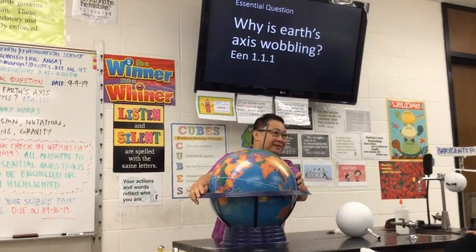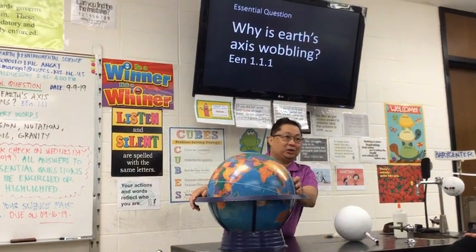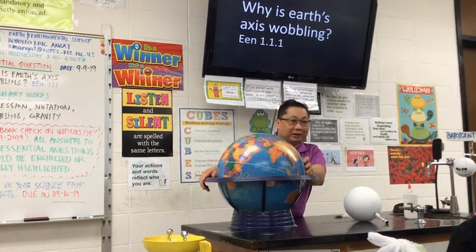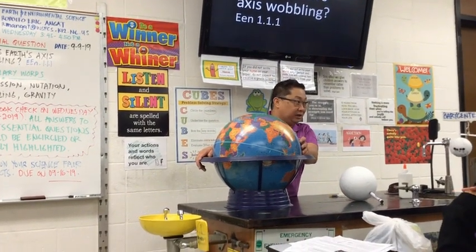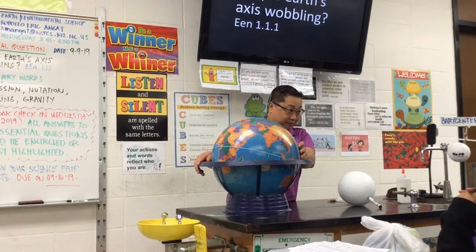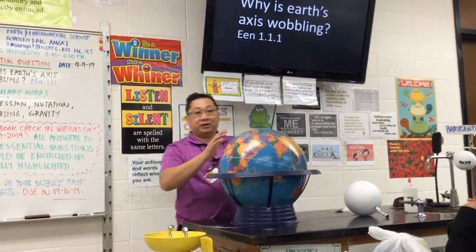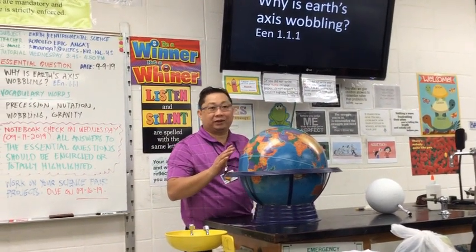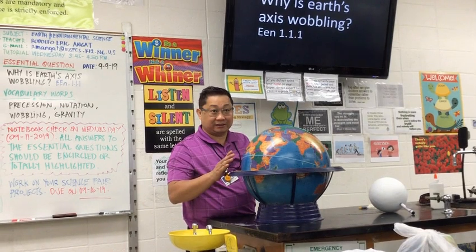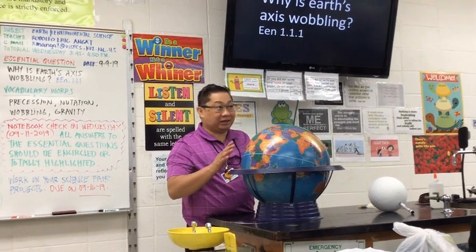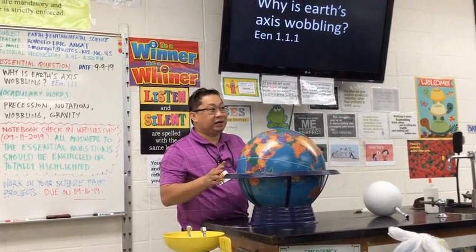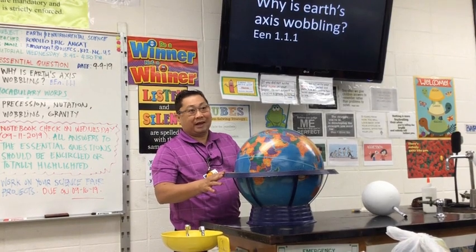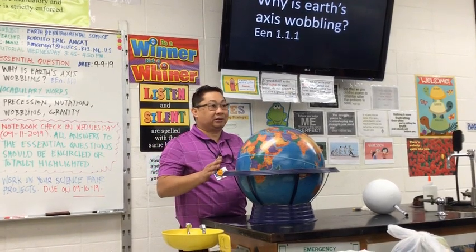Take note, nothing in the universe is permanent. The only thing that is permanent is change itself. So even the Earth's axis is not always 23.5 degrees. It changes, though the change takes place over a very long time — this tilt changes.